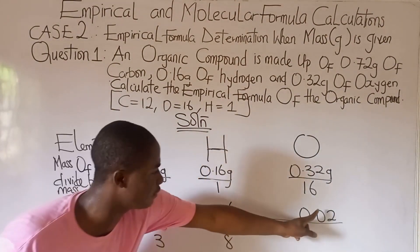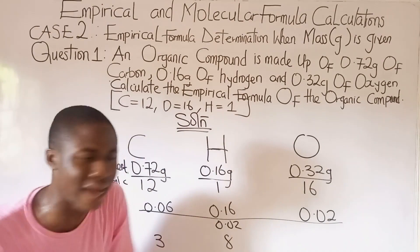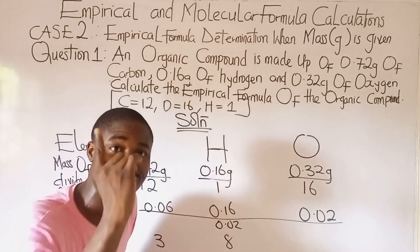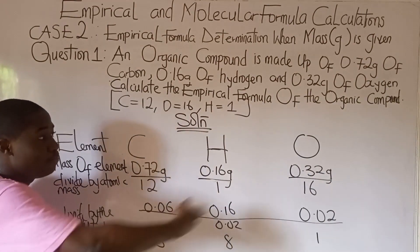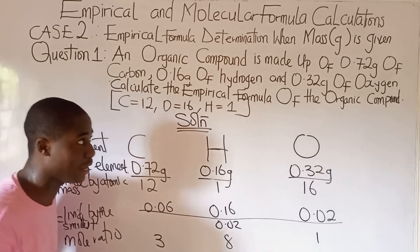And lastly, I think we'll divide this by this. We are getting 1. Yes. Because 0.02 divided by 0.02. That is 1. So you can see that we're getting the mole ratios of these elements.